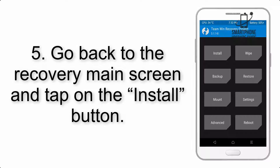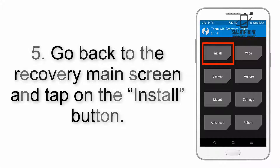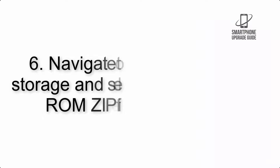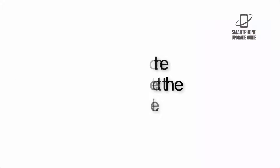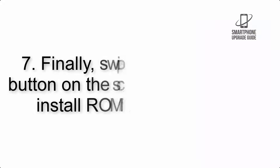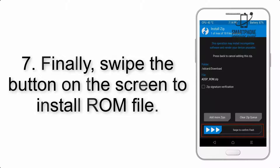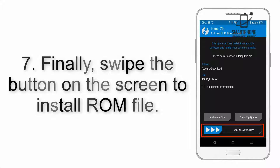Step 4: Swipe the button to wipe the device. Step 5: Go back to the recovery main screen and tap on the Install button. Step 6: Navigate to the storage and select the ROM zip file.